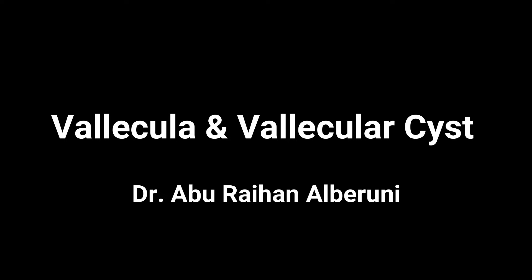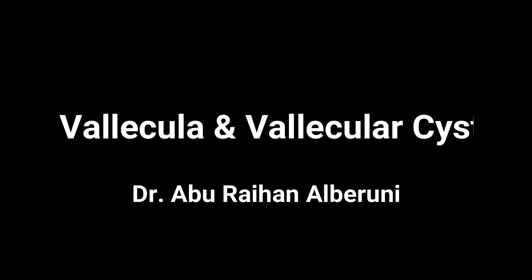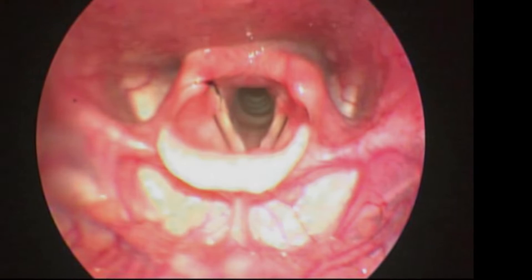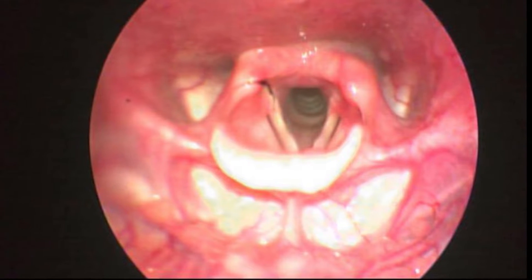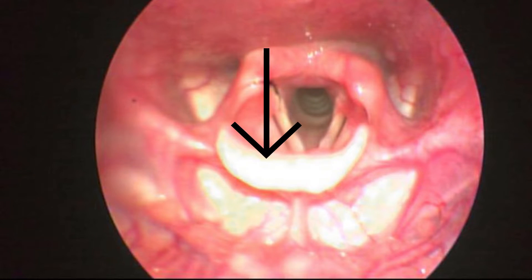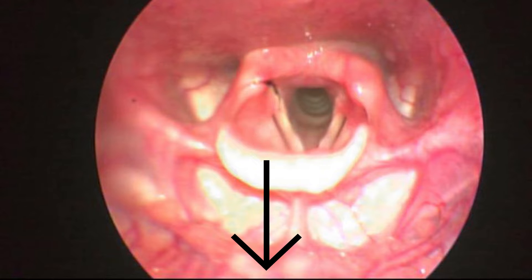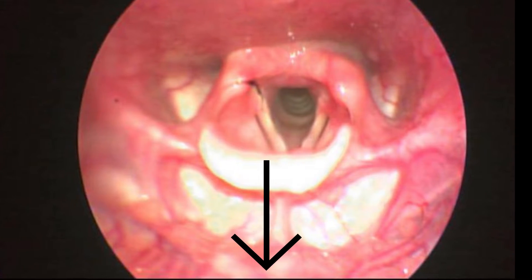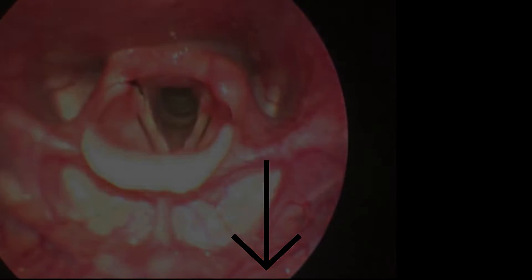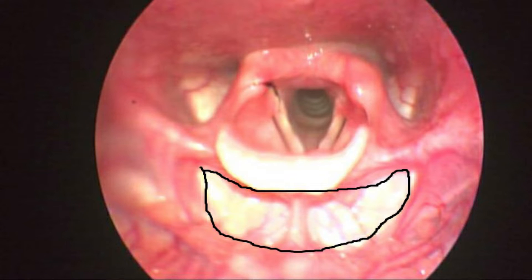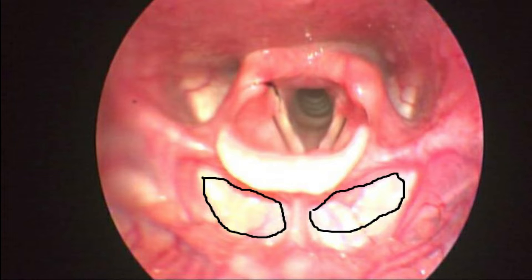Hello viewers, welcome to my channel. Today I'll talk about vallecular cyst. First, you know what is vallecula — have a look at this picture. This is the view of the larynx with the help of a rigid endoscope. This is the epiglottis, this is the base of the tongue, and the vallecula is the space in between the base of the tongue and the epiglottis. There are two valleculae on each side of the midline.